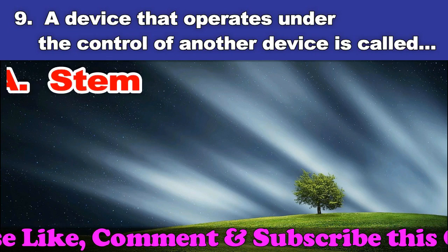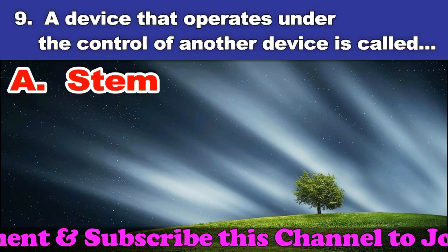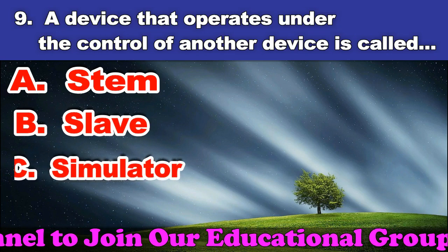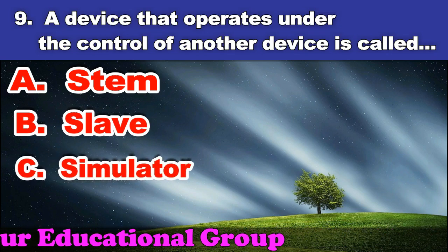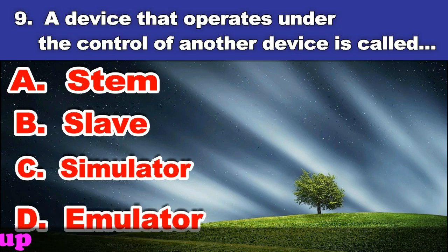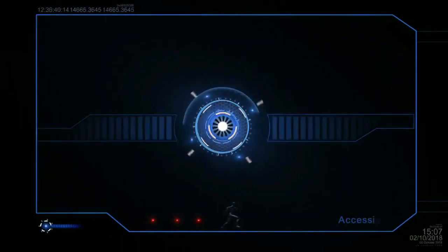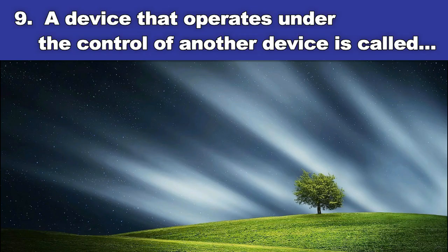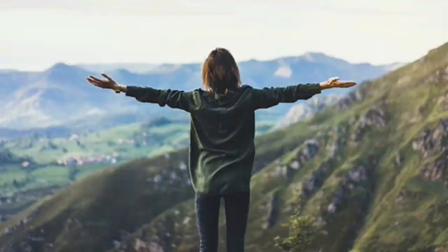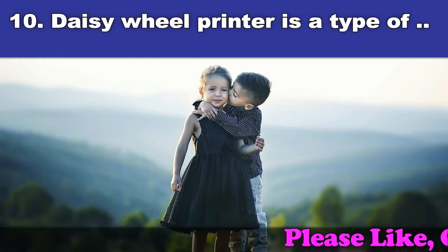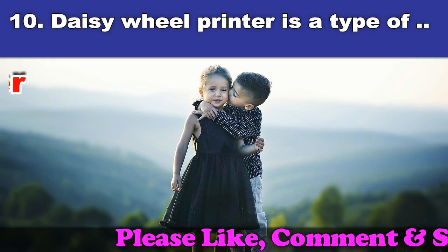Ninth question: A device that operates under the control of another device is called. A. Stem. B. Slave. C. Simulator. D. Emulator. And the answer is slave.